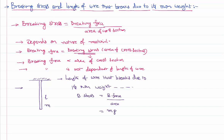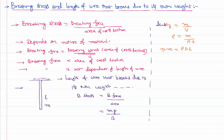Assuming that the wire has mass m, breaking force is equal to mg divided by area of cross section. Assuming we don't have information regarding the mass, I can write the density of that material as mass by volume. Further, volume equals area of cross section multiplied by length. So in place of mass I can write: density × area of cross section × length. Substituting this data into the equation, I can write: breaking stress equals density × area of cross section × length × g divided by area of cross section. The area of cross sections cancel out.